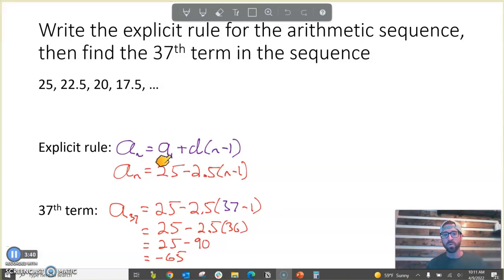We need to know how to, like our general form of the explicit rule, and then we need to know that if I can identify the first term and the common difference, I will then have that explicit rule for an arithmetic sequence that we can use to predict, say, the 37th term in our sequence, as we did here.